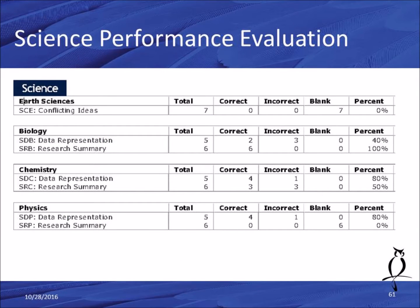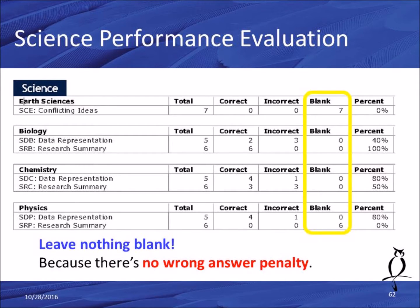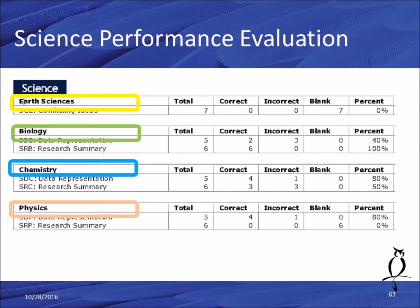The last part on your report is your science performance, set up the same way — total number for each type of question, how many you got right, wrong, and blank. And of course, the blank column should always show zeros — no wrong answer penalty. You'll get four different types of passages: biology, chemistry, physics, and earth sciences — on every exam. You get seven total passages; it's just a matter of how they're divided among these subcategories.